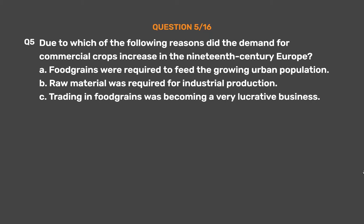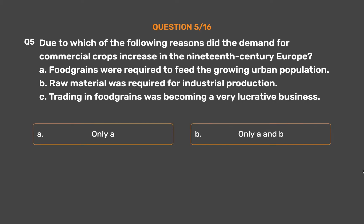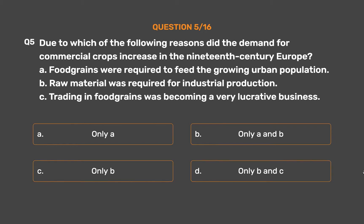Question 5: Due to which of the following reasons did the demand for commercial crops increase in 19th century Europe? A: Food grains were required to feed the growing urban population. B: Raw material was required for industrial production. C: Trading in food grains was becoming a very lucrative business. Option A: Only A. Option B: Only A and B. Option C: Only B. Option D: Only B and C.